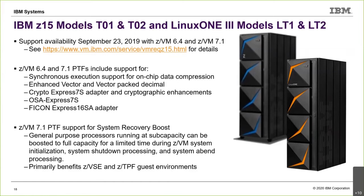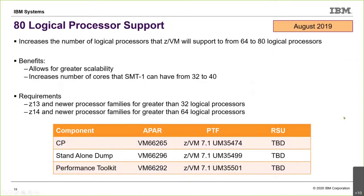System recovery boost — the ability to bring sub-capacity general purpose processors to full capacity for a limited time during ZVM initialization, shutdown, or admin processing — is there to benefit VSE guests or TPF guests. That support didn't go back to 6.4 since it was unique new function for 7.1. Another scaling item: we released support for 80 logical processors. When I started, a six-way was a big system, and now we're at 80. With SMT enabled, that means up to 40 cores.